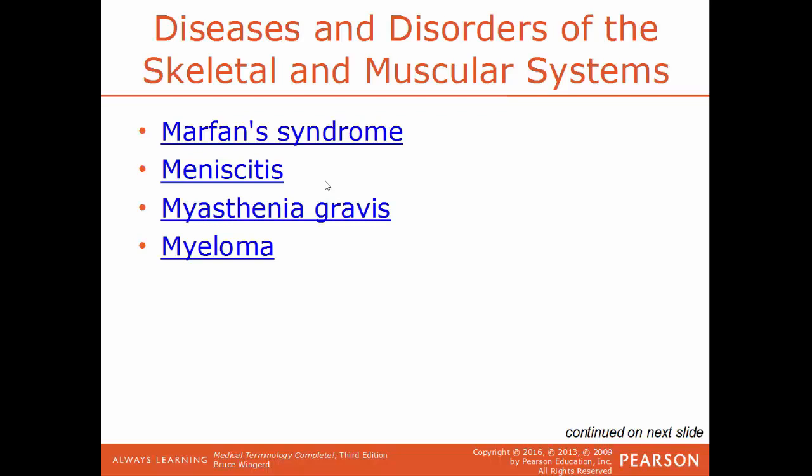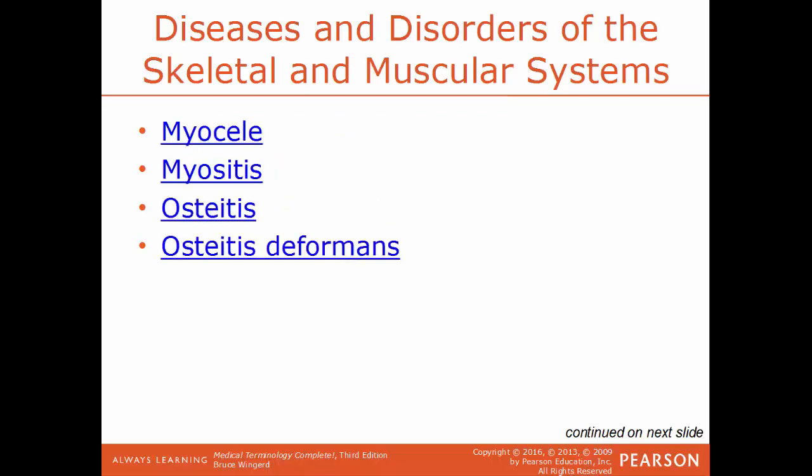Myasthenia gravis is an autoimmune chronic neuromuscular disorder causing varying degrees of muscle fatigue and weakness, with common symptoms including drooping of the eyes, weakness of eye muscles, and impaired ability to walk. Myeloma is a malignant tumor of the bone marrow. Myocele is a herniation of muscle through its outer sheath. Myositis is degeneration and inflammation of muscle tissue. Osteitis is degeneration and inflammation of the bone. Osteitis deformans is a chronic bone condition causing very large, deformed bones due to excessive growth and tearing-down cycles, leading to bone pain, arthritis, and fractures.